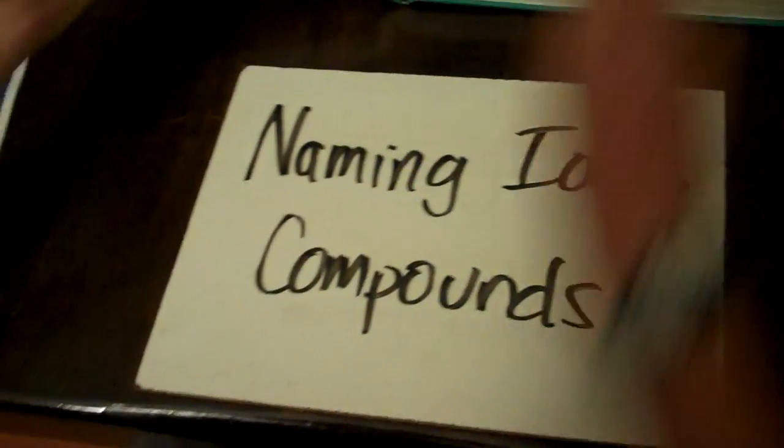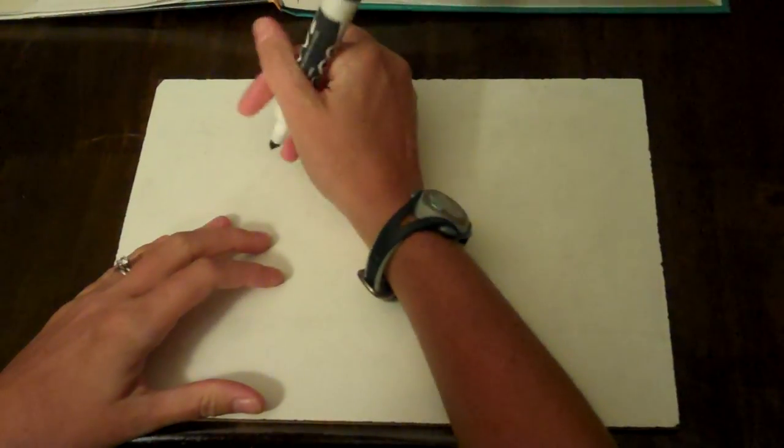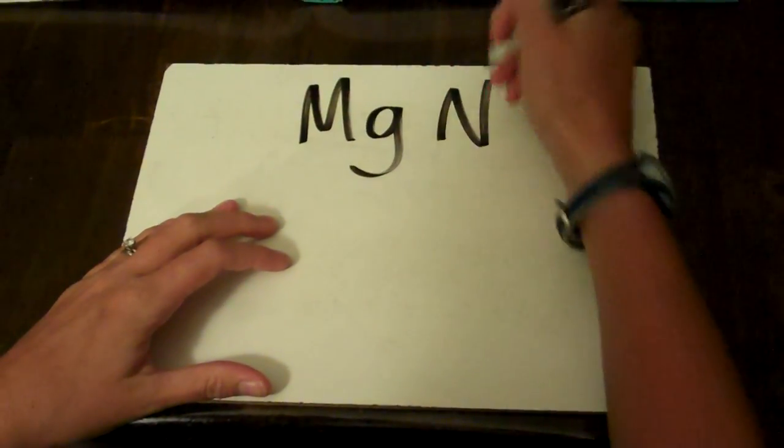Alright, so let's go ahead and get started. Basically what we're going to do is I'm going to give you a few elements. I'm going to talk you through how to name them. So let's say that you wanted to put together magnesium and nitrogen.